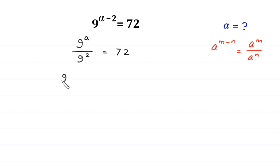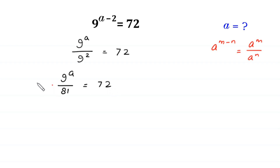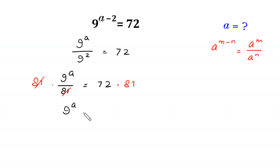Next, 9 to the power a divided by 9 squared — and 9 squared is equal to 81 — is equal to 72. Now, from here we multiply both sides of this equation by 81. At the right side we multiply by 81, so this 81 will be cancelled out with this 81, and at the left side we are left with 9 to the power a is equal to 72 times 81.